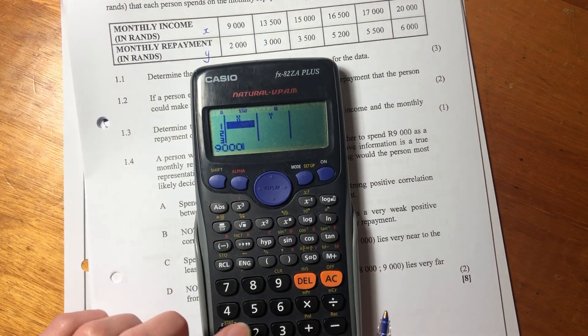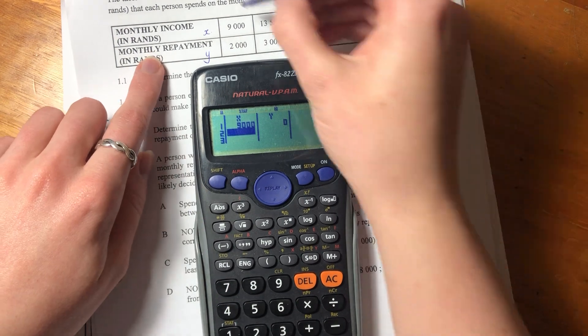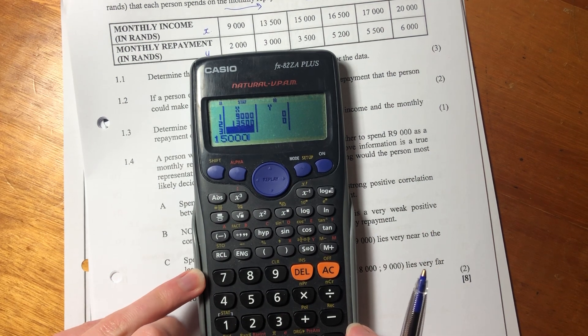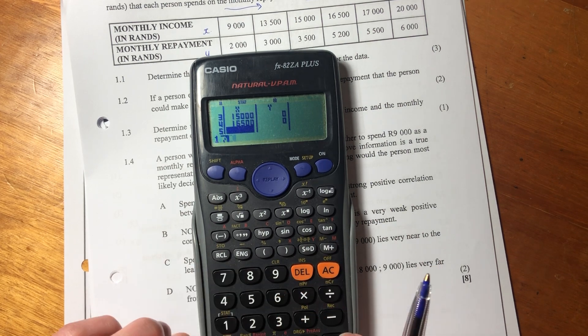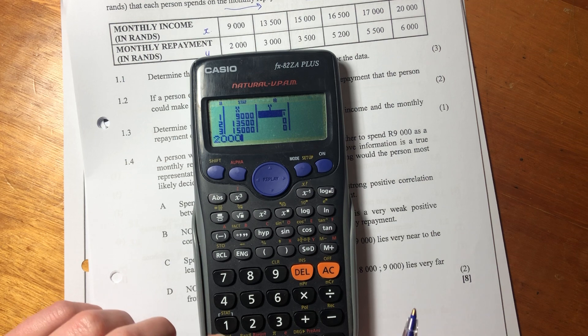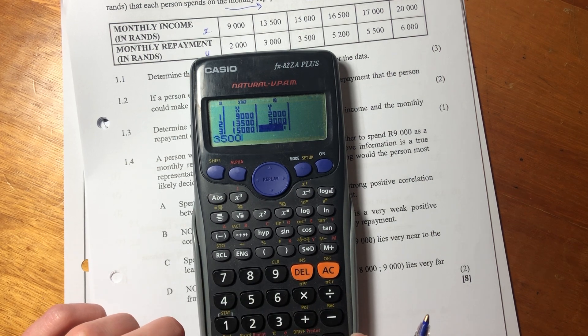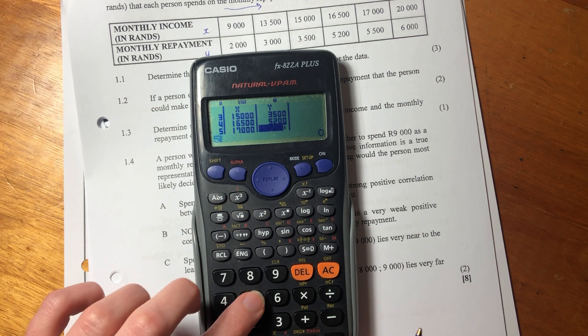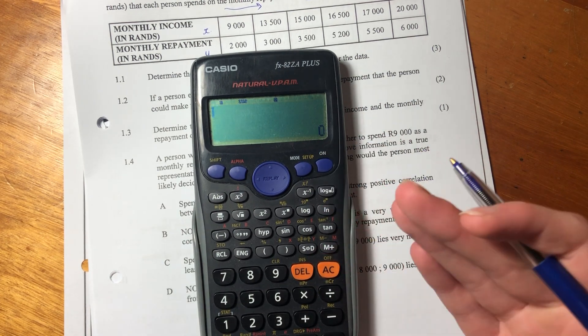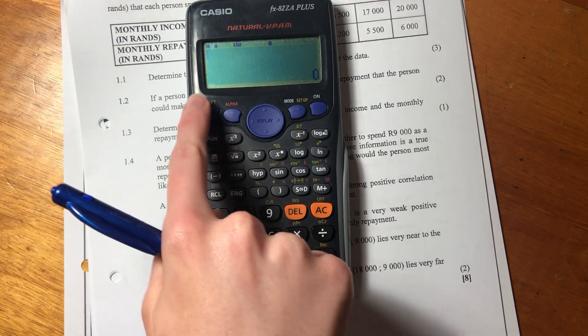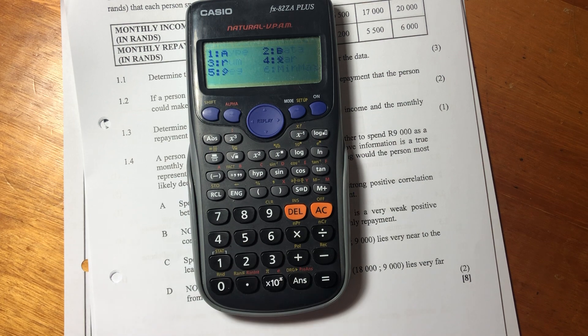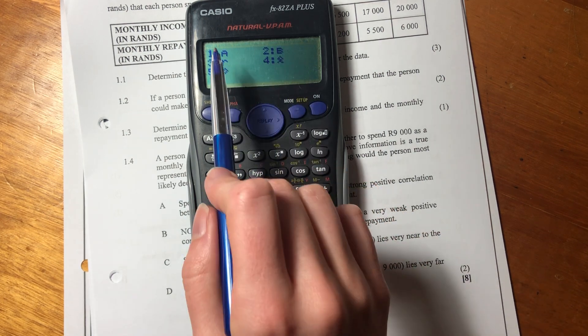The most important thing here is that you put your data in correctly. So I'm going along this way for my X value. So put in the 9,000, put in the 13 and a half thousand, 15,000, 16 and a half thousand, 17,000, and 20,000. Put in all my X values. Let's now go to our Y. 2,000, 3,000, 3,500, 5,200, 5,500, and 6,000. So now I have that. Now you can just press the AC button, you might be like, oh, I lost all my data. You didn't, don't worry. Then we go to shift, press shift up there, then press stat down here. Then we're wanting to find regression. We're working with regression. So press 5, and then look, there's an A, there's a B, there's an R, there's an X, and there's a Y. We know that we want A and B for this question.